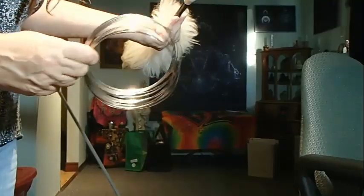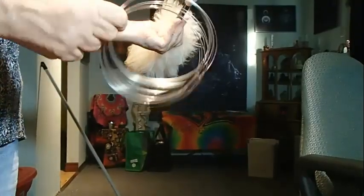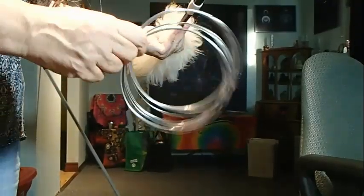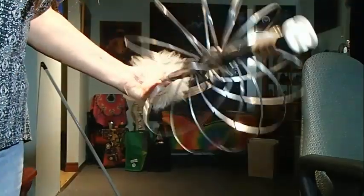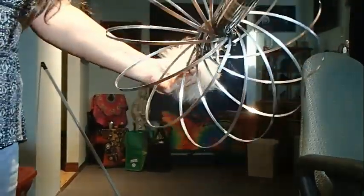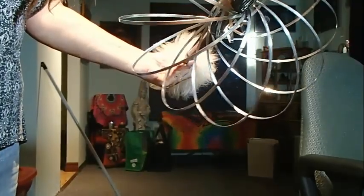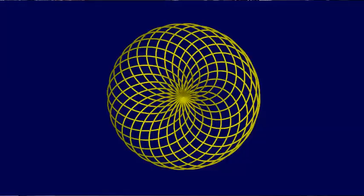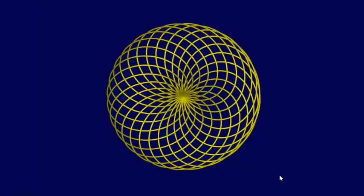Today we're going to have a look at this little toy here called the Toroflux. This is a toy that you can buy for your kids or your grandkids. It is basically the torus knot geometry that I modeled in my software — it's exactly the same geometry.